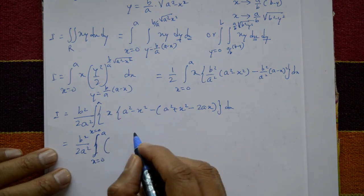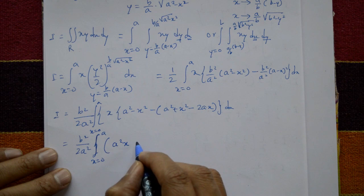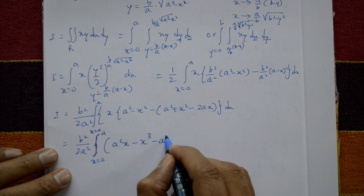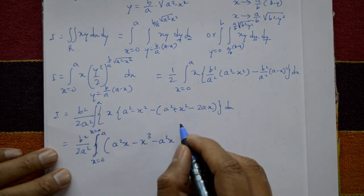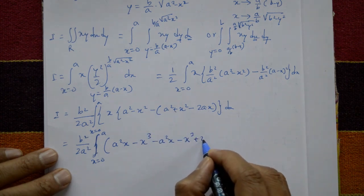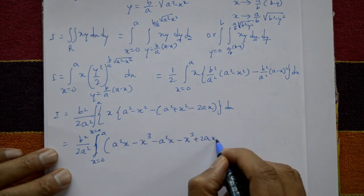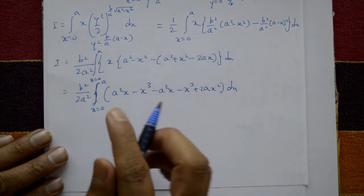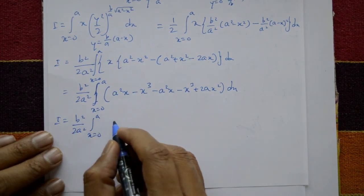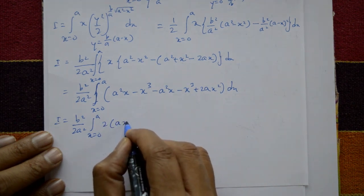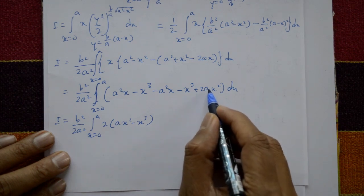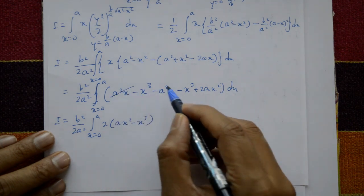After opening and multiplying x into the bracket 2ax−2x², we get 2ax²−2x³. So I = (b²/a²) ∫₀ᵃ (2ax²−2x³) dx. The factor of 2 and b²/2a² combine to give b²/a². The terms 2ax²−2x³ — after cancellation of like terms — simplify to 2ax²−2x³.